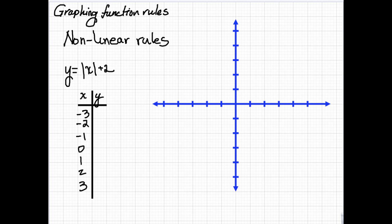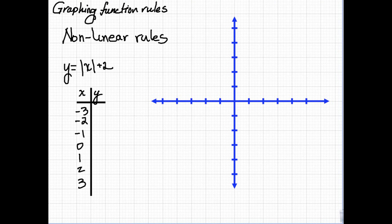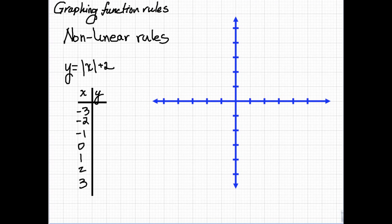We're now going to take a look at how to graph a nonlinear function rule. As before, we'll start by making a table. So let's use our function rule. If x is negative three, the absolute value of negative three plus two, that's absolute value of negative three is three plus two equals five. The absolute value of negative two plus two, that's two plus two, that's four. And we can continue the process to complete the table.